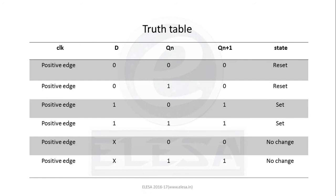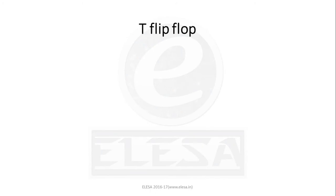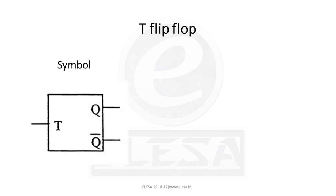If D is 0 and the clock is applied, Q goes to 0 and Q bar goes to 1 at the rising edge of the clock pulse. At each positive edge, if the corresponding D input is given, we get the respective outputs Q(n) and Q(n+1). The same working takes place with the negative edge-triggered D flip-flop, with the difference that the output transition occurs at the negative edge. Coming to the T flip-flop, it has a single control input, and T symbolizes toggle.